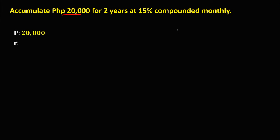For the rate, we have 15%, and 15% in decimal is 0.15. For the time, since 2 years, the time is equal to 2. For the compounding period, since compounded monthly, and we have 12 months in a year, the compounding period is equal to 12.